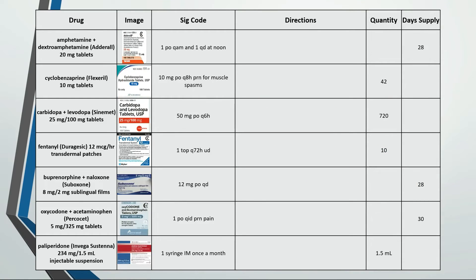On to our next set. This is take one tablet by mouth every morning and one tablet every day at noon. Two tablets a day for 28 days is a 56-day supply. This is take one tablet by mouth every eight hours as needed for muscle spasms. 42 divided by 3 is a 14-day supply.